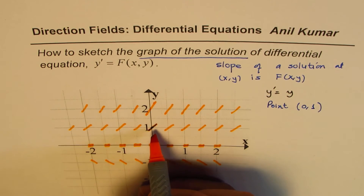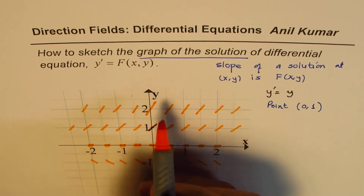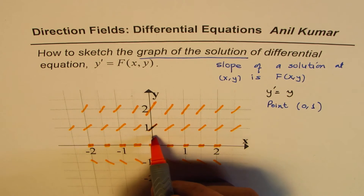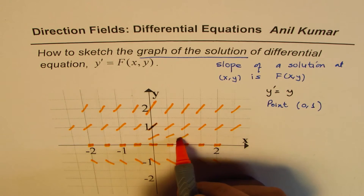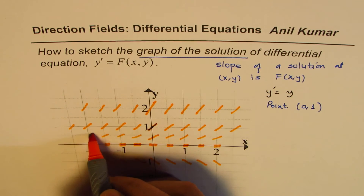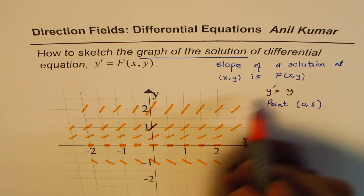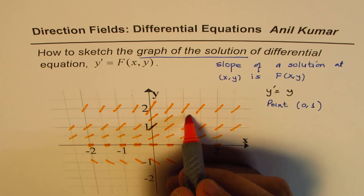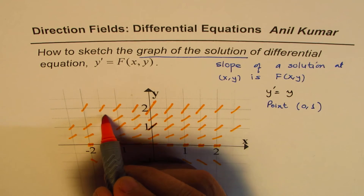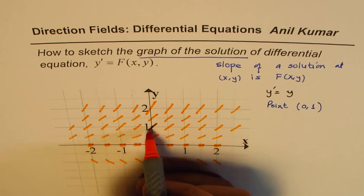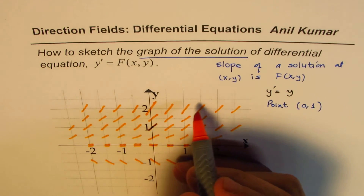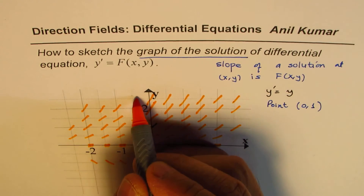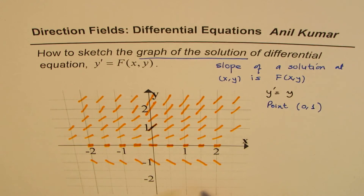If we take points even closer together, we can get a fairly accurate graph. For example, if y = 0.5 then y' = 0.5, so we represent lines with slope one-half all along that line. Similarly, if y = 1.5, the slope lines are steeper than at y = 1 but less steep than at y = 2. And at y = 2.5, the slope is steeper still.